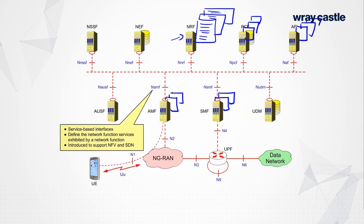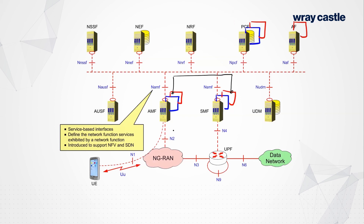Can a UE be supported by multiple slices at the same time? Yes. We do this via PDU sessions — for every slice there will be at least one separate PDU session, which may or may not have a different IP address depending on the terminating network. A good example is the vehicle of the future: vehicles have very complex communication requirements. You need a mobile broadband slice for entertainment in the back seat, a slice for real-time navigation, and the vehicle manufacturer may want a slice for engine management connectivity.